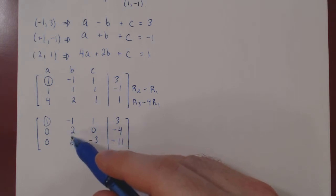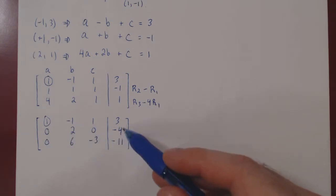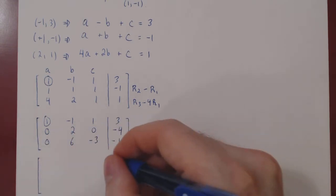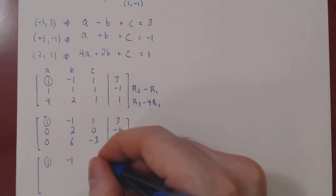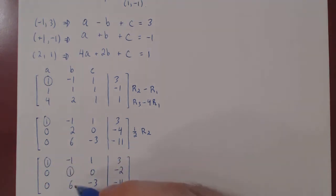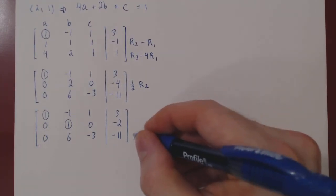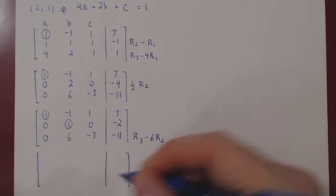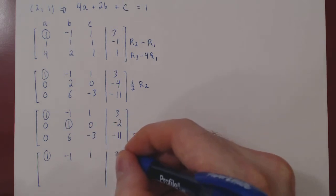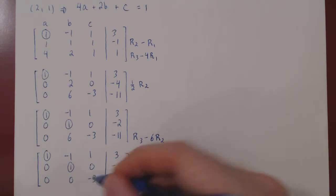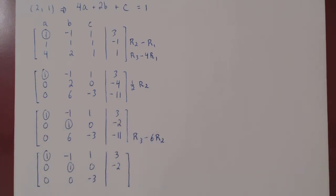Well, we can easily get our second leading one by multiplying row two by one half. And this is great because of the four here, we will not have any fraction. We can now kill the entry below it by doing row three minus six row two. We can recopy our first two rows. Negative three minus zero, negative three. Negative eleven, negative six times negative two is positive twelve, which gives us positive one.